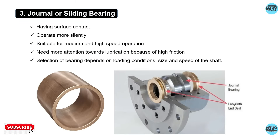Plain and sliding bearings have large surface contact and high friction, but they operate more silently and are suitable for medium and high speed operations. Attention to lubrication is very important due to the higher friction. The selection of these bearings depends on size, load condition, and the speed of the shaft.